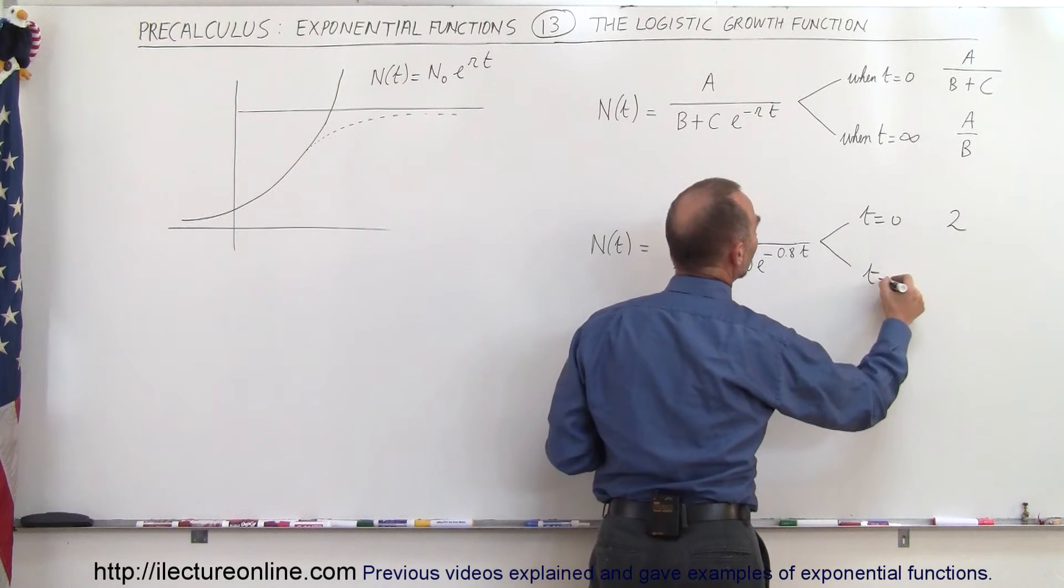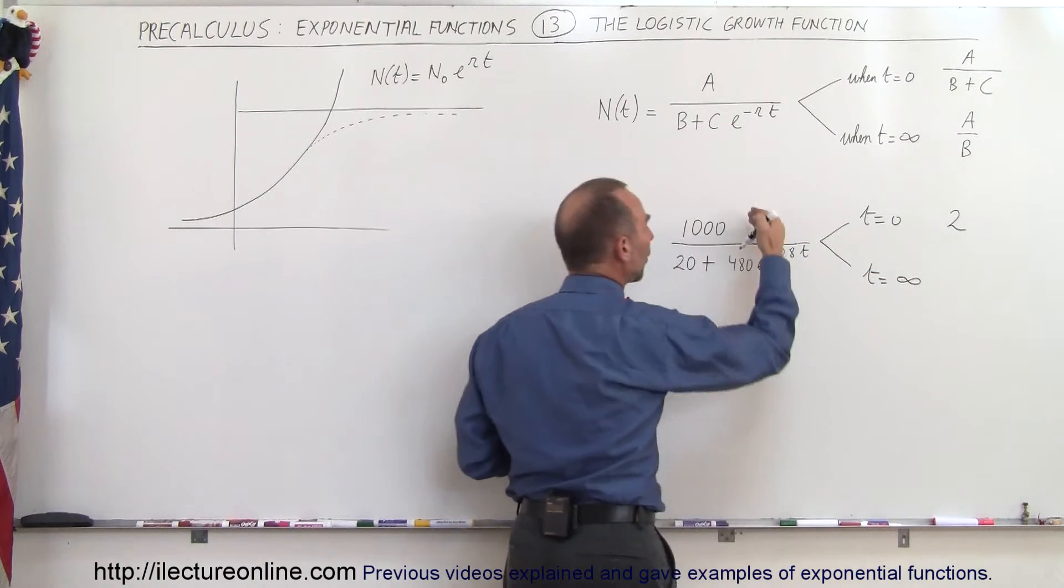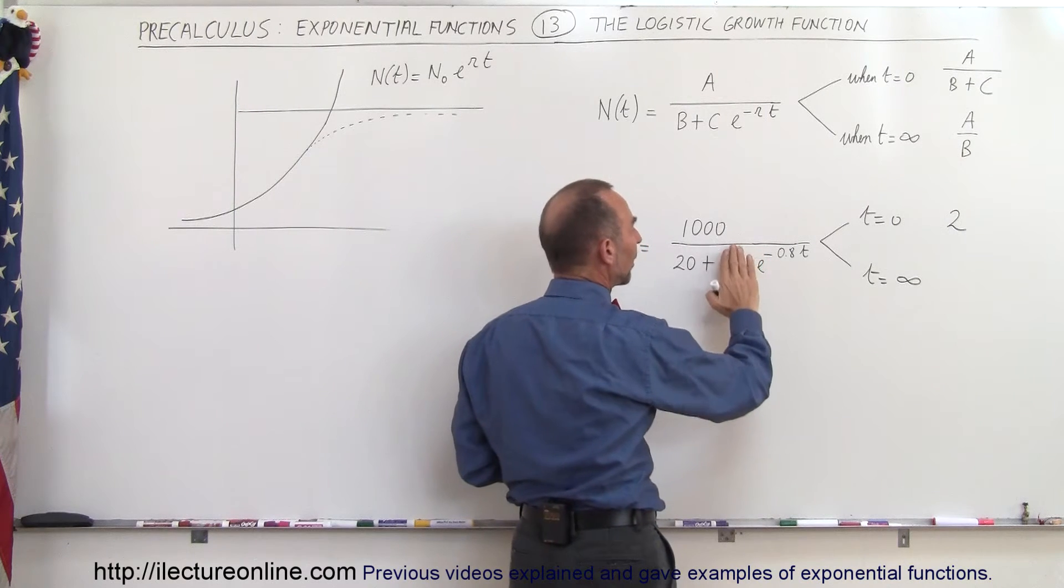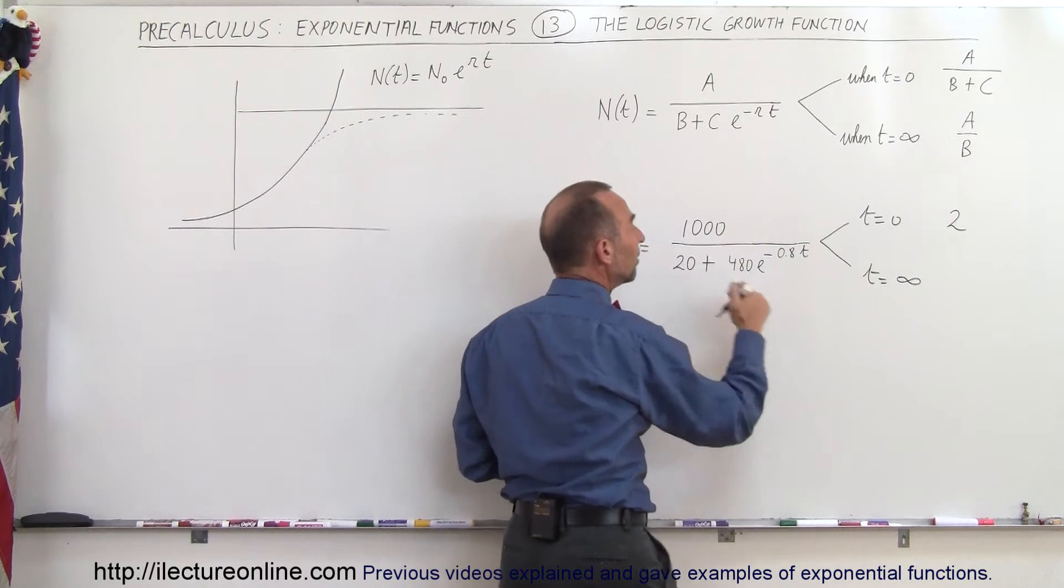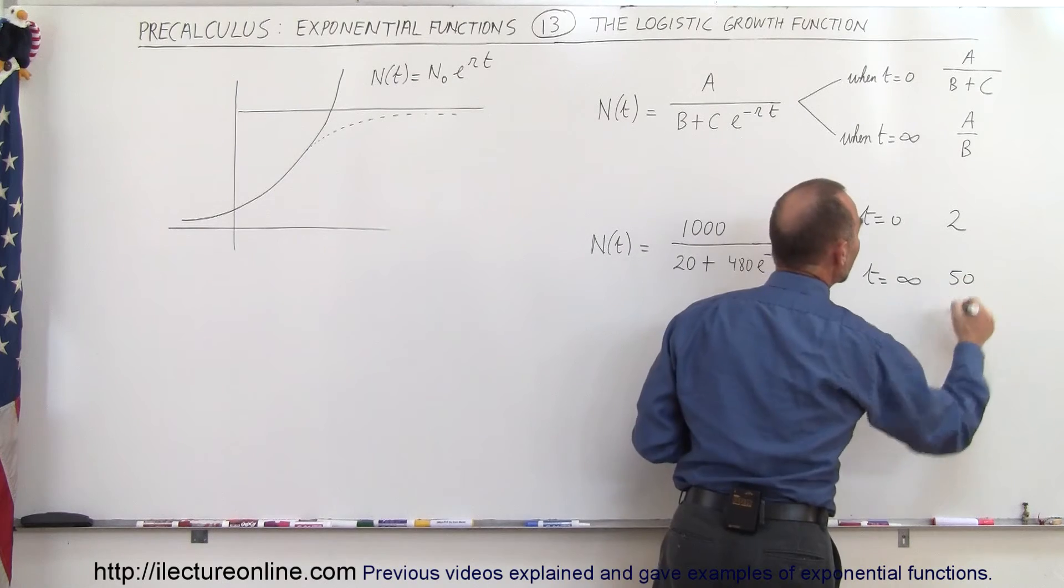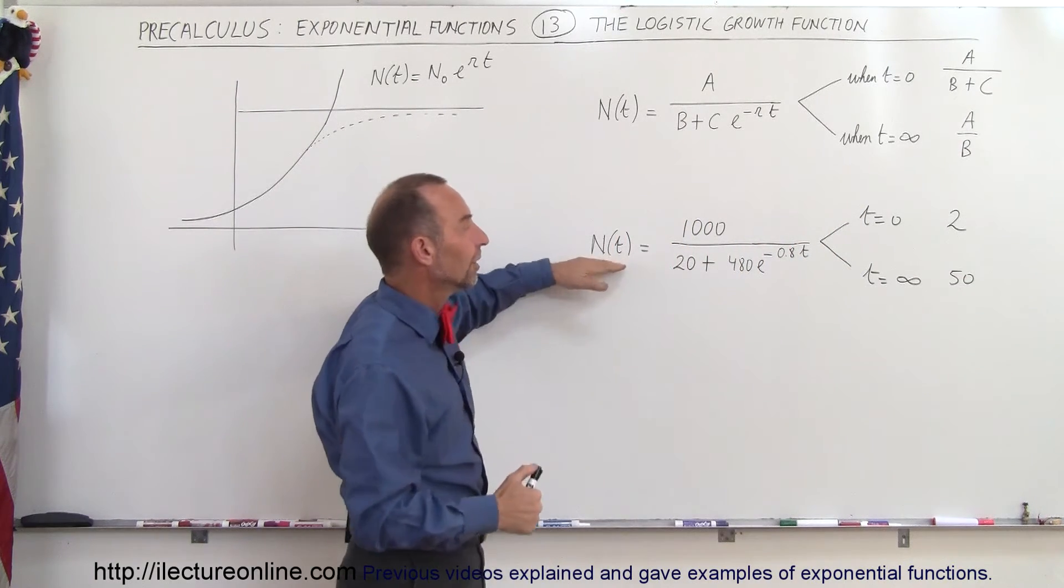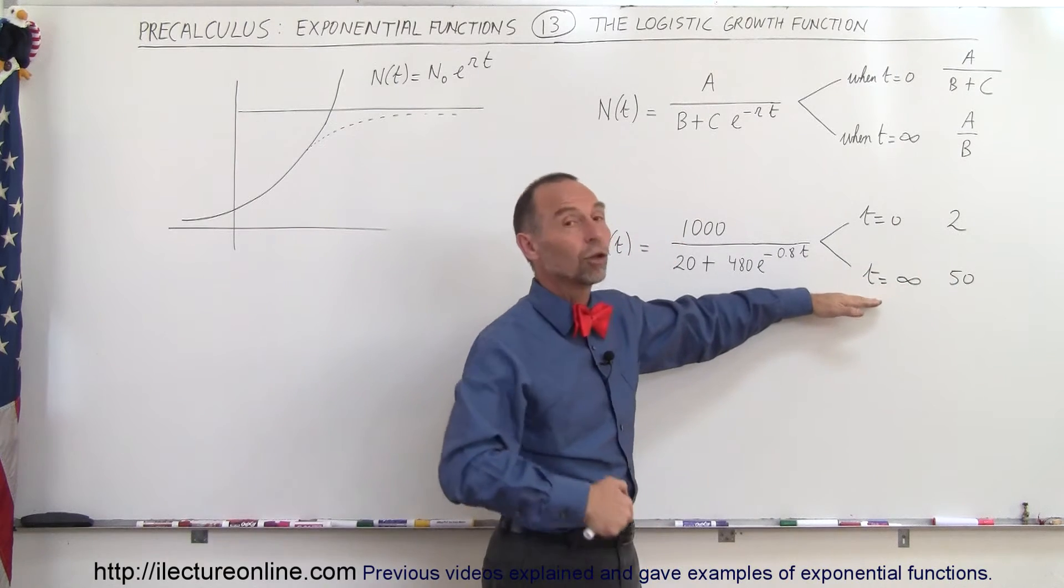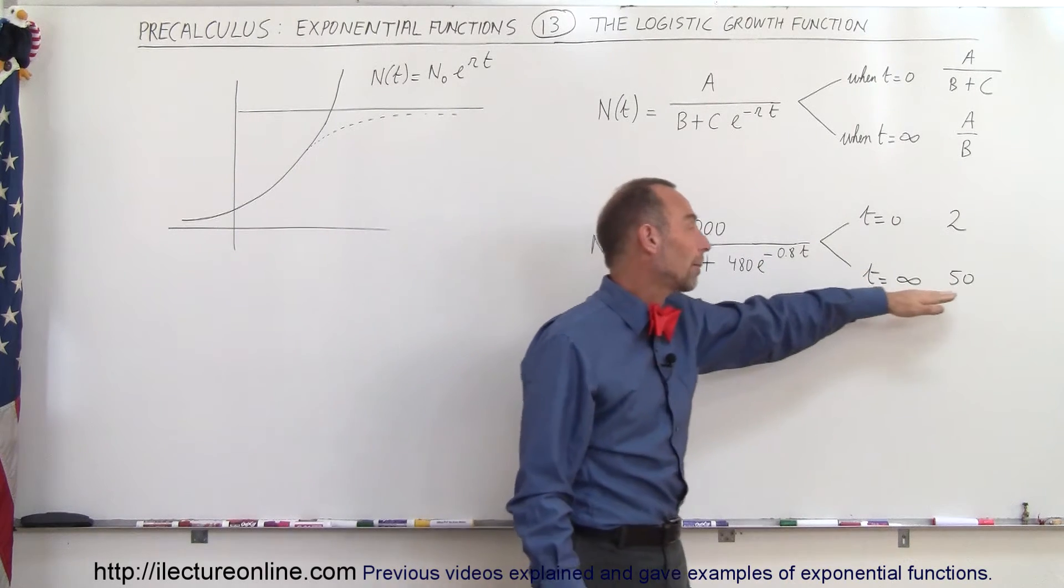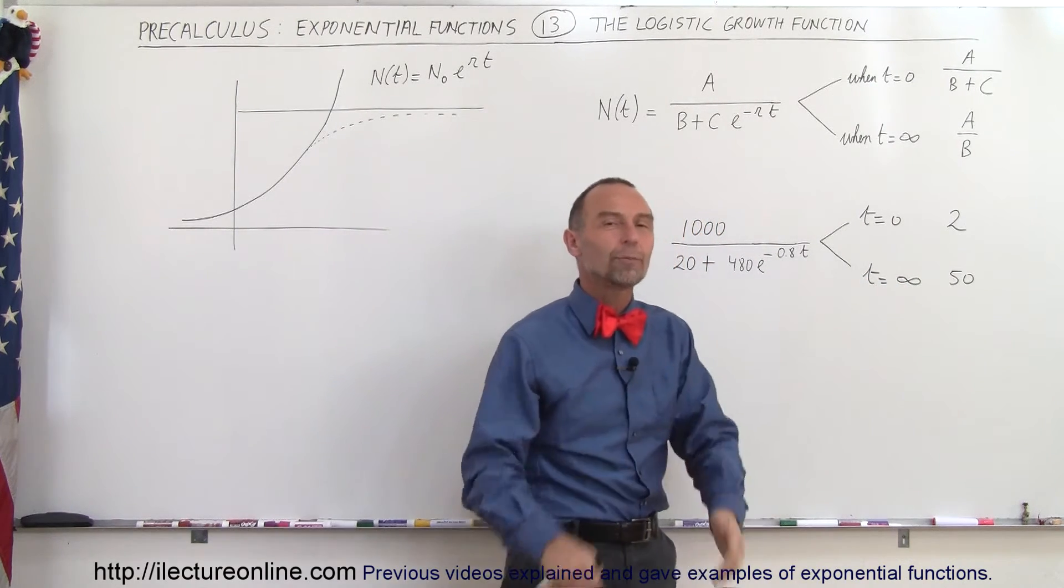Then when t is equal to infinity, we can say that 1 over infinity is 0, this goes away, 1000 divided by 20 is equal to 50. Which means that when time is equal to 0, the population is equal to 2 and after a large amount of time has elapsed, the population reaches 50 and doesn't grow beyond that.